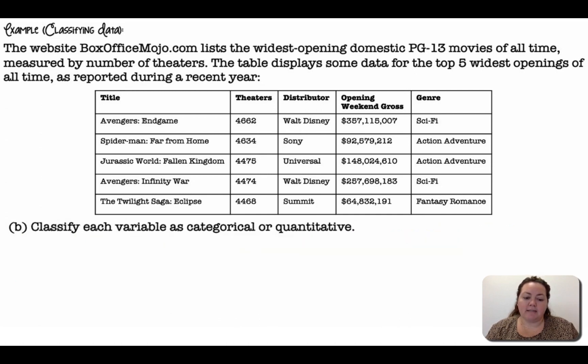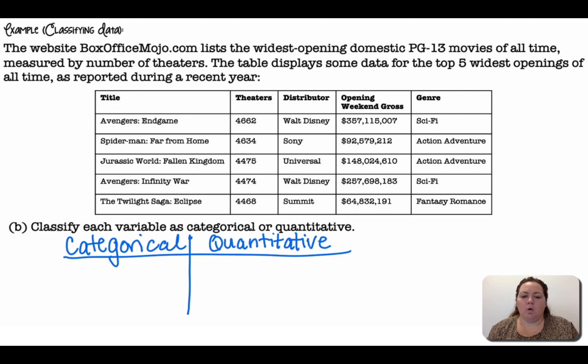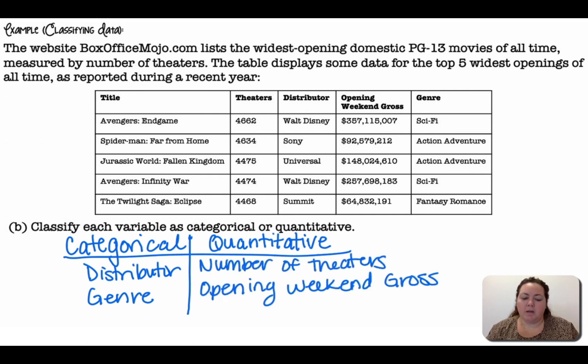Classify each variable as categorical or quantitative. All right, so we're gonna break them up into either categorical, they are a category, they're like a label, or quantitative, they're numerical, and it would make sense to average them. So for categorical, the distributor, so Walt Disney, Sony, Universal, putting them into category. Or genre, again, that's putting it into a category. Quantitative would be the number of theaters, and the opening weekend gross.